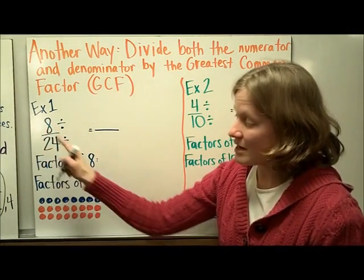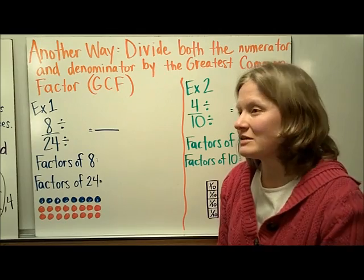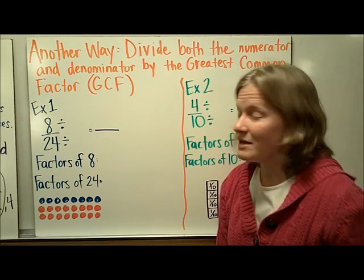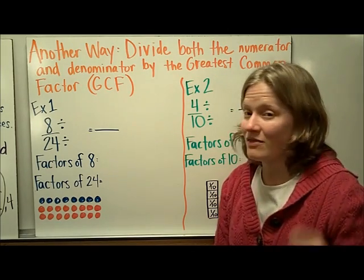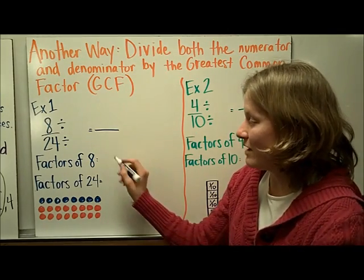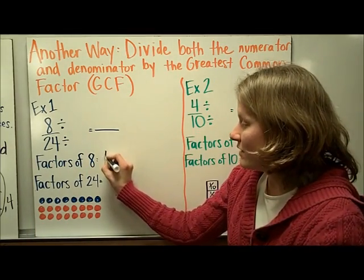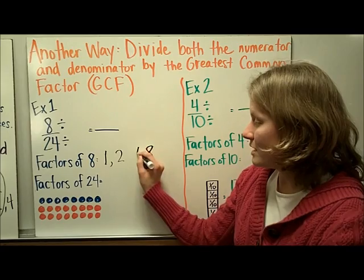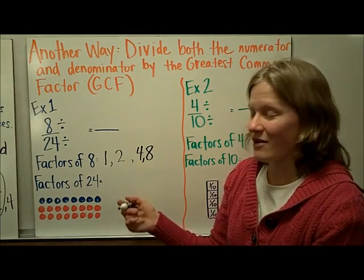So if I have the fraction 8 twenty-fourths and want to simplify that, I'm going to think about what are the factors of 8. When I know I have to find the factors, I think: if you want to find a factor, you've got to break it down. That tells me I need numbers smaller than 8. Factors of 8: 1 times 8 makes 8, and 2 times 4 makes 8. The only other number to check is 3, and 3 is not a factor of 8.